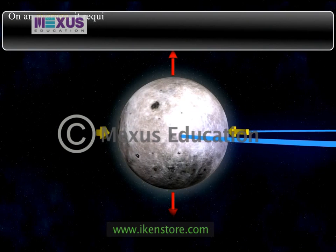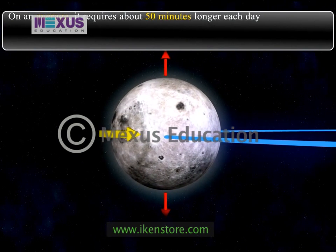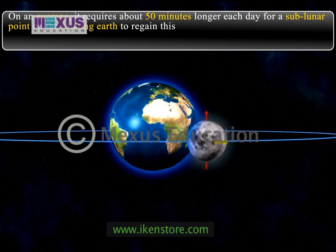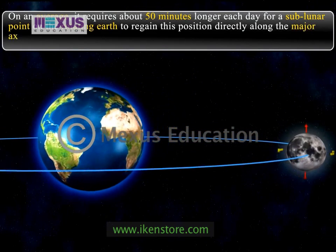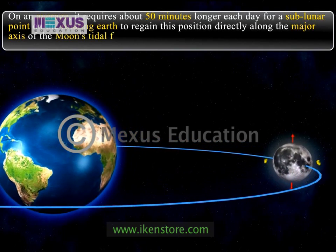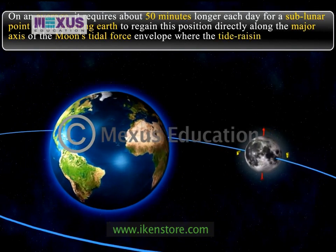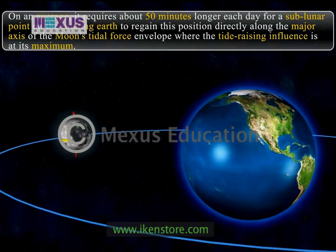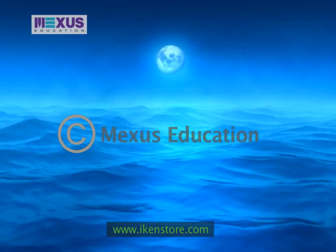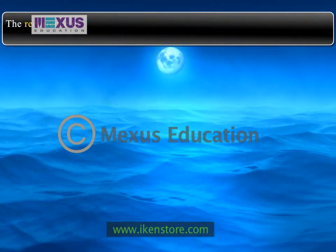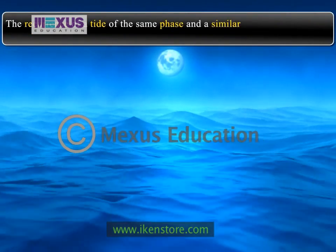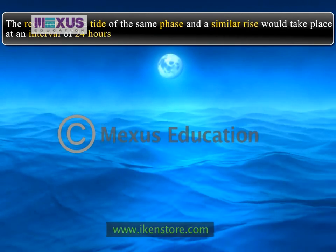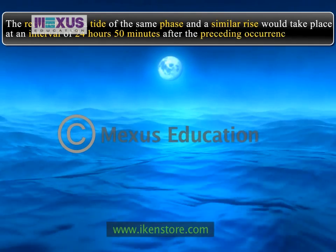On an average, it requires about 50 minutes longer each day for a sublunar point on the rotating earth to regain its position directly along the major axis of the moon's tidal force envelope, where the tide-raising influence is at its maximum. In consequence, the recurrence of a tide of the same phase and a similar rise would take place at an interval of 24 hours and 50 minutes after the preceding occurrence.